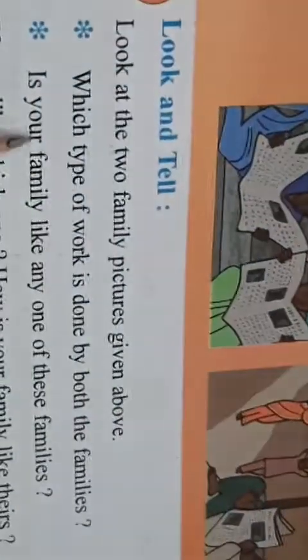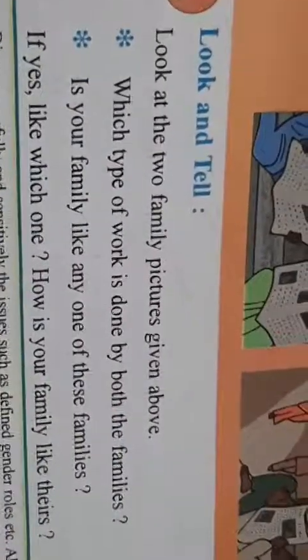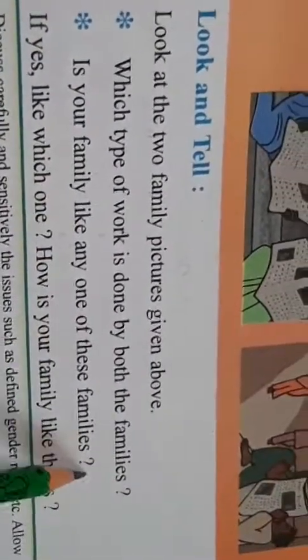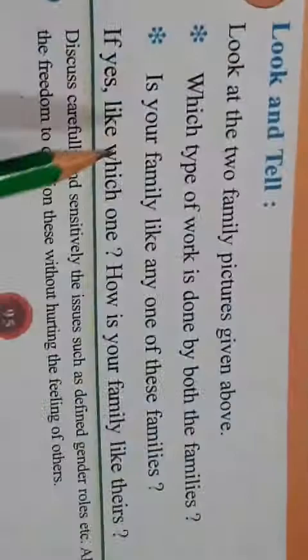Now look and tell — look at the two family pictures given above. Which type of work is done by both the families? Yaan sab mil julke kaam karte hai, mil julke baithke khana khaate hai — yaan pere aisa nahi hai.